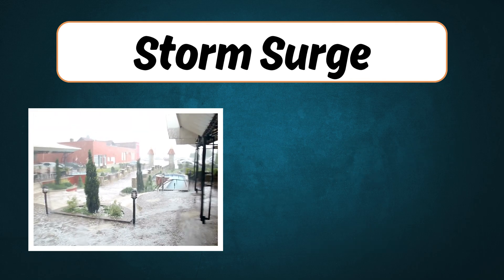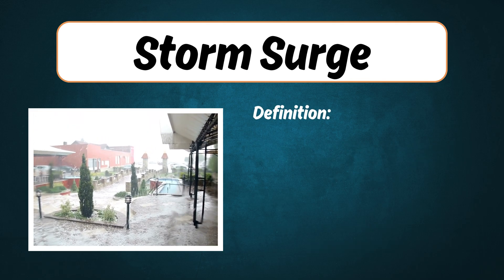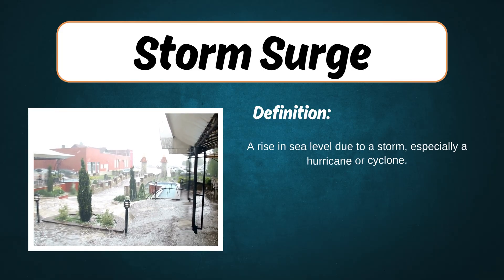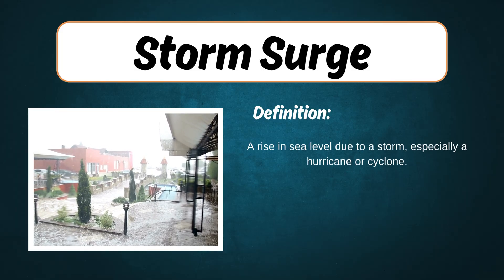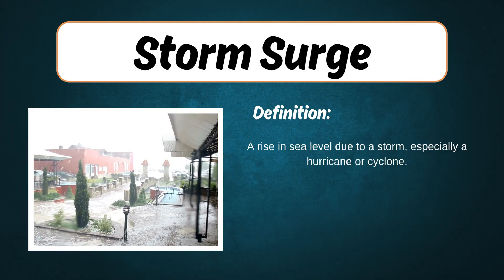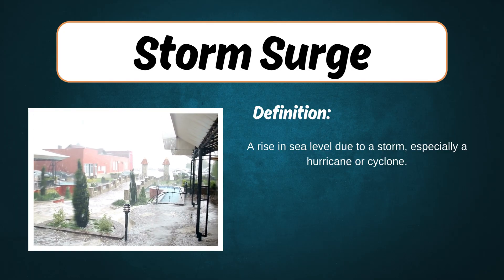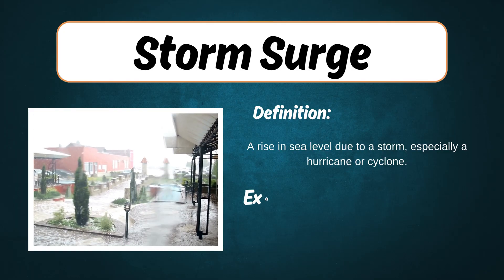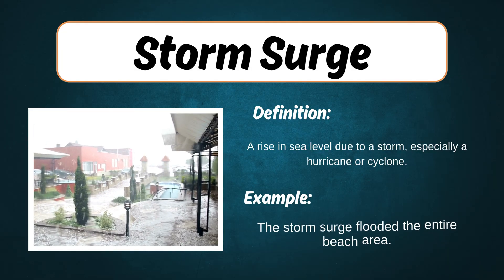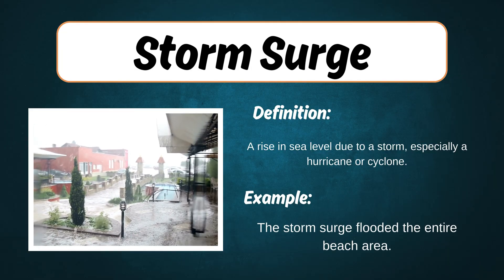Storm surge. Definition: A rise in sea level due to a storm, especially a hurricane or cyclone. Example: The storm surge flooded the entire beach area.